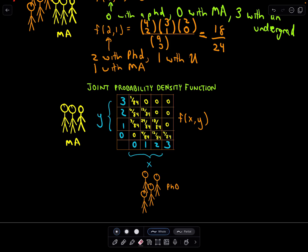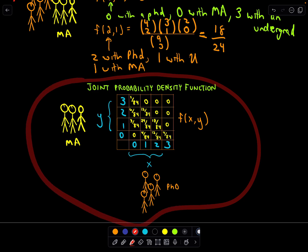Notice there's no nice closed formula, but that's okay — it still works as a valid joint PDF. This is just a quick introduction to joint probability density functions. Computing these probabilities can be the tricky part, and it depends on the situation. In the next video, I'll start talking about marginals that go with these joint PDFs, and we'll look at that in regard to this last example. Thank you.